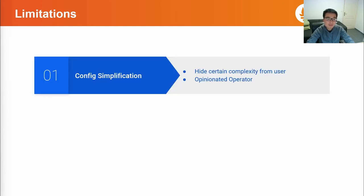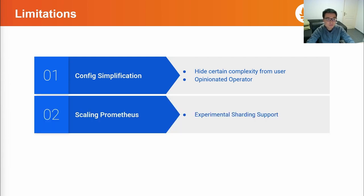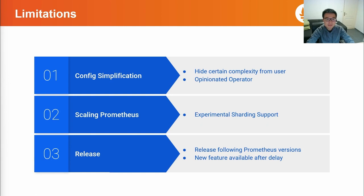Despite all the convenience brought by Prometheus operator, there are still three notable limitations. First, the operator's configuration is rather simplified — certain details are hidden from users and non-configurable, and the operator operates components in a way that may differ from the user's habits, such as different naming conventions and locations of configuration files. Second, the scaling of Prometheus is still a weak point — there is no automatic way to scale out Prometheus; currently, targets are naively distributed among shards. Third, regarding releases, the developers make best effort to follow the latest Prometheus version and include new features, but they always come with a delay.